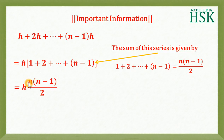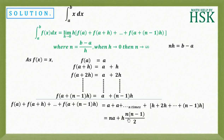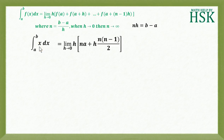So the sum h + 2h + ... + (n-1)h = h × n(n-1)/2. Therefore, the total f(a) + f(a+h) + ... + f(a+(n-1)h) = na + h·n(n-1)/2. The value of ∫x dx from a to b equals the limit as h→0 of h times this expression.